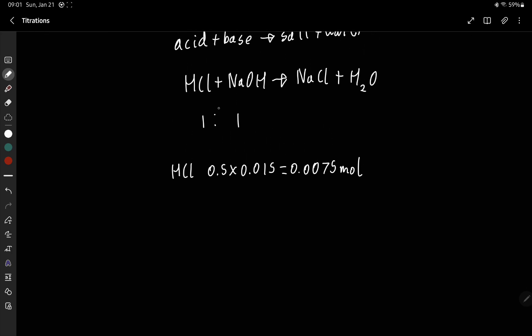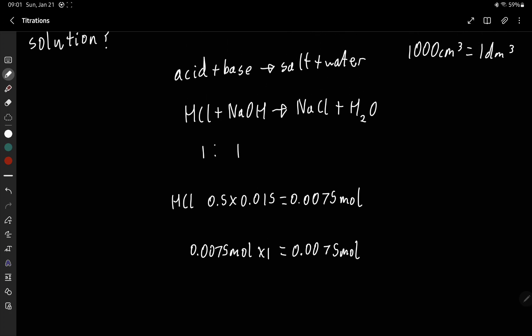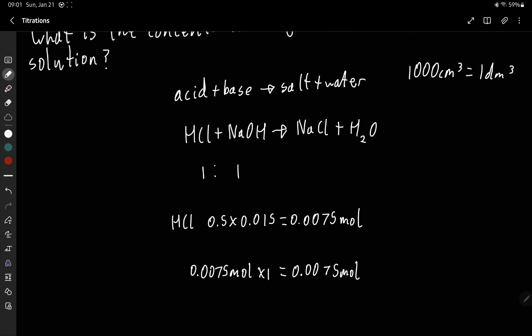So now if we look back, we know the ratio is one to one, so we do 0.0075 mole times one is just 0.0075 mole. So obviously this is not going to be the case for all reactions—say we had like HCl was two, obviously in this case it's not, but just for an example, you divide it by two.